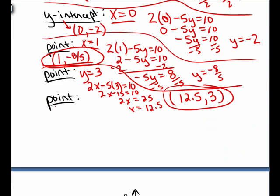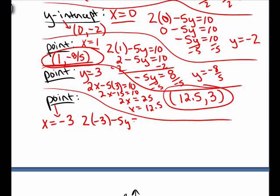For a third point, I'll go ahead and pick x equals negative 3. I let x be negative 3 in my equation. And I solve the equation for y. I have negative 6 minus 5y is 10. I add 6 to both sides. So negative 5y equals 16. Divide both sides by negative 5. And we get y equals negative 16 fifths.